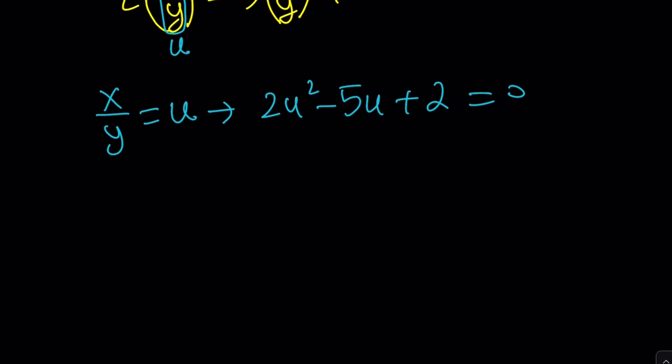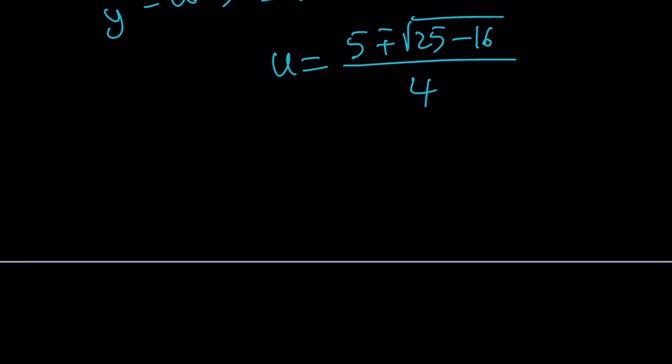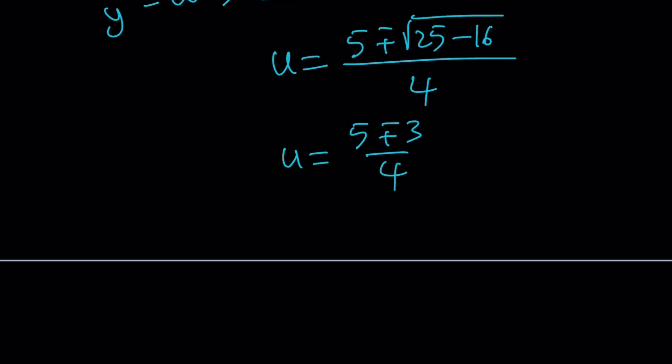So, I can solve it using the quadratic formula. Let's solve it. u equals negative b, plus minus the square root of b squared, which is 25, minus 4ac, which is 16. And 25 minus 16 is 9. And the square root of 9 is 3. Okay. I had to think about it for a second. 5 plus minus 3 over 4. And from here, we get 2u values. Okay.